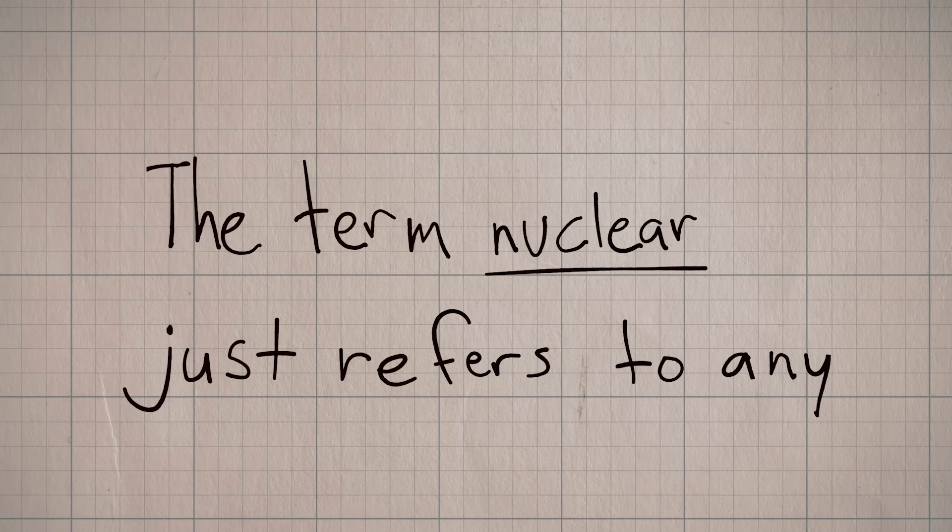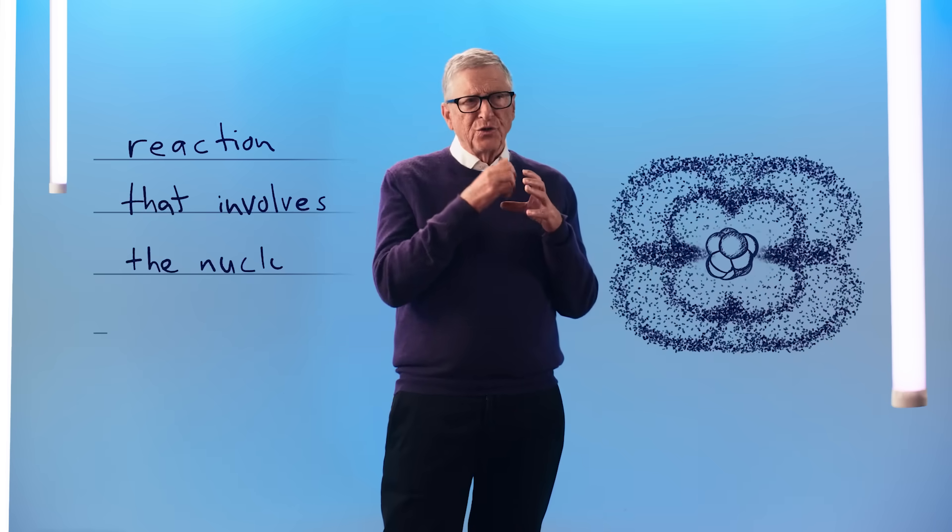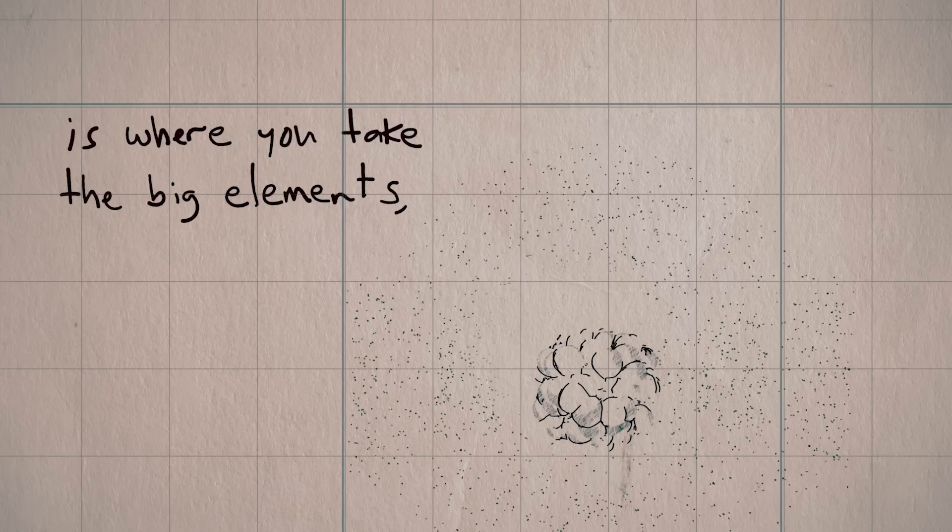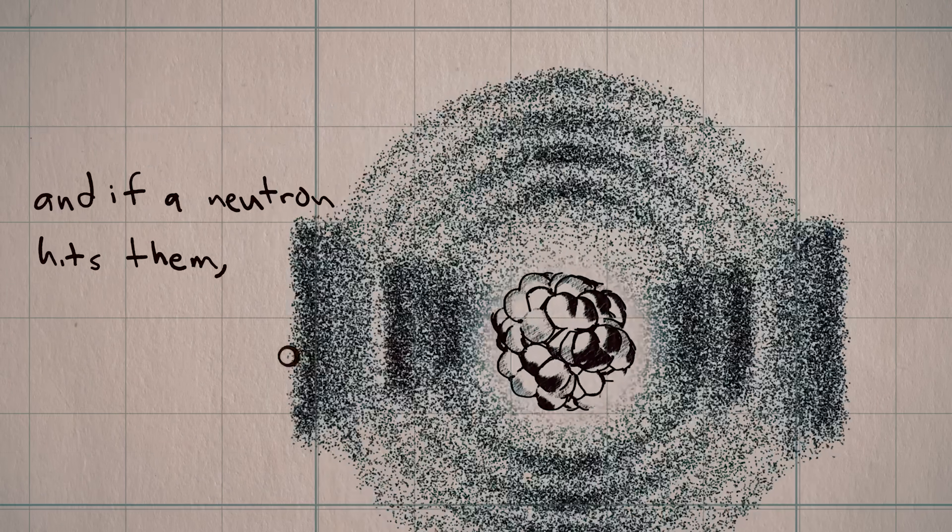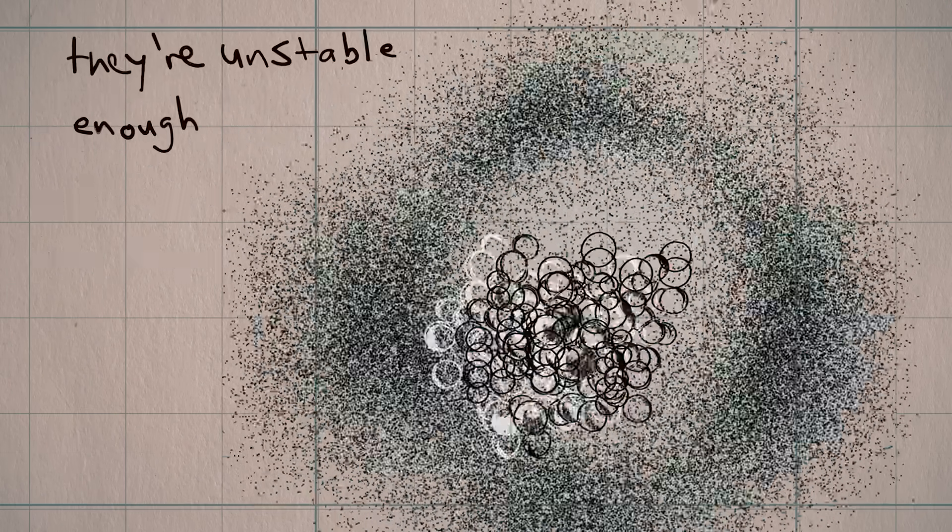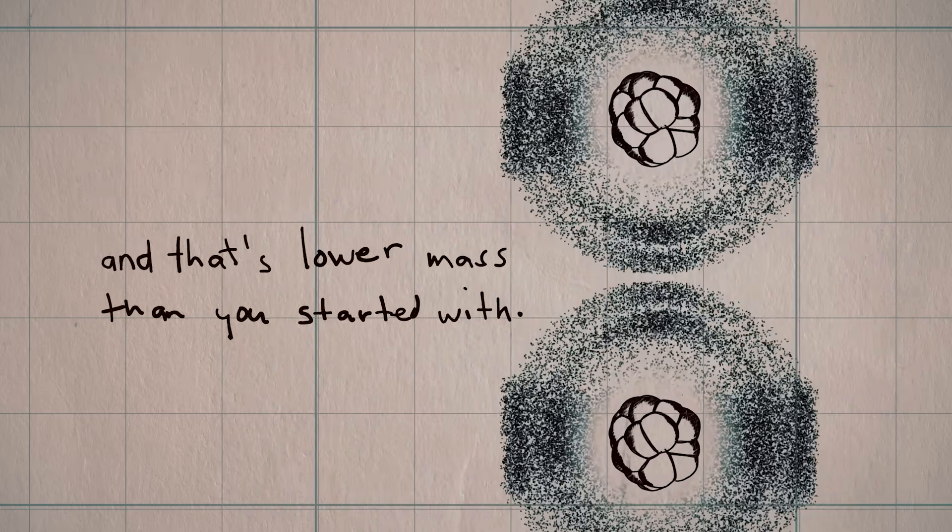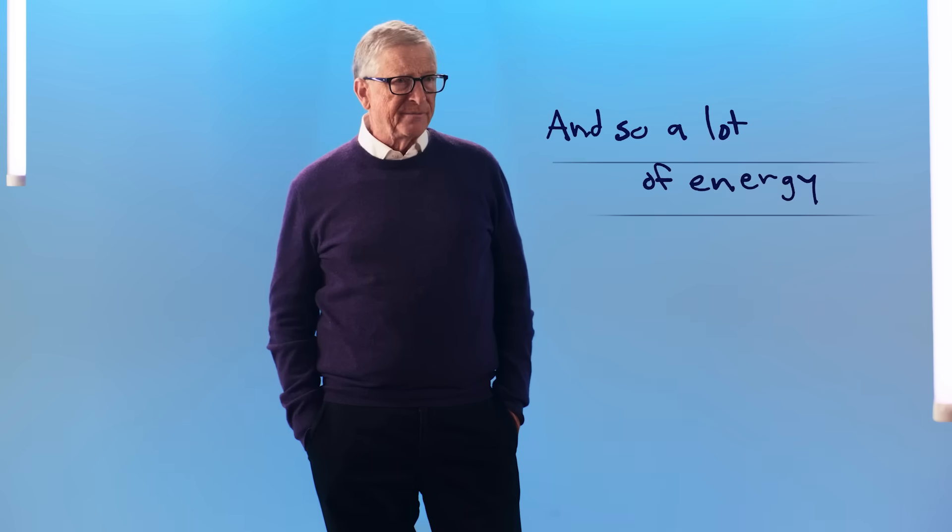The term nuclear just refers to any reaction that involves the nucleus of the atom. A fission reaction is where you take the big elements, and if a neutron hits them, they're unstable enough that they split into two, and that's lower mass than you started with. And so a lot of energy is given off.